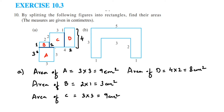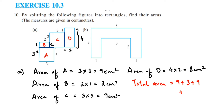Now we add up all the areas to get the total area of the given shape. Total area equals 9 plus 2 plus 9 plus 8. I had mistakenly written 2 × 1 as 3 for B earlier — it should be 2. So 9 + 2 + 9 + 8 = 28 centimeters squared. That is the area of the whole first figure.